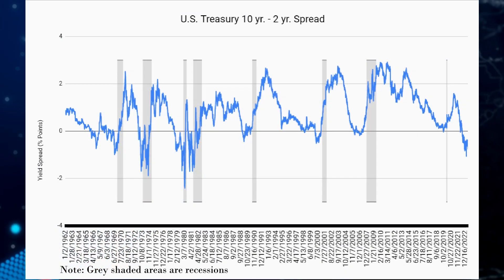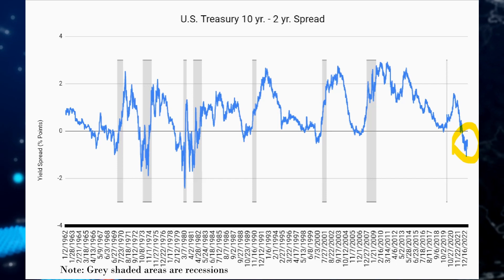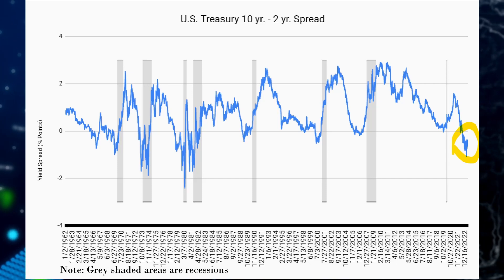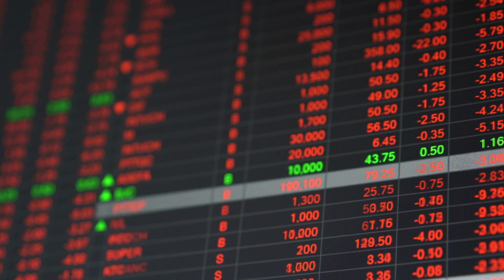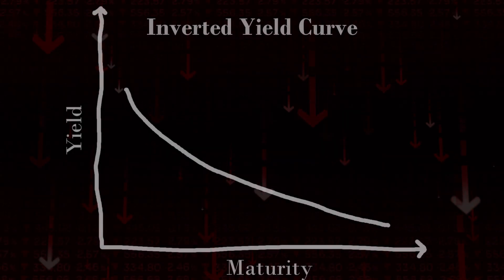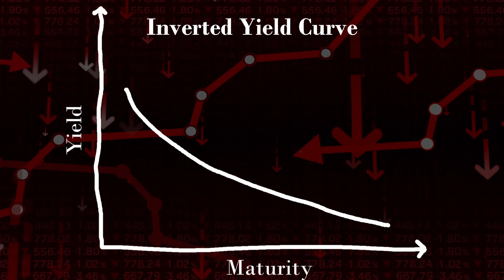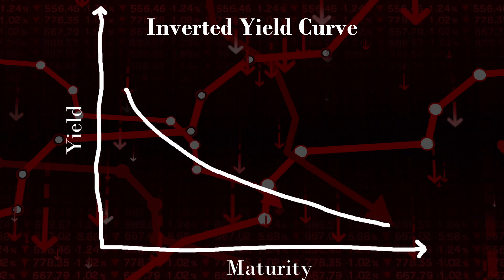Lastly, the important thing to note is that the inverted yield curve does not specify the timing of when the recession will happen. Historically, recessions have followed anywhere from seven to 24 months after the yield curve inversion. At the time of making this video, the yield curve has been inverted since July of 2022. It is now June of 2023, a year later, but there have been no major signs of recession — no negative GDP growth quarters yet. So it remains to be seen if or when it will happen, but that is a little bit of history behind the inverted yield curve and why it has been considered a good predictor of future recessions.